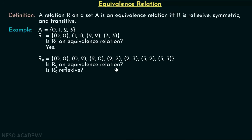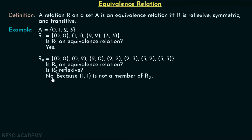Is R2 an equivalence relation? First, is R2 reflexive? We have (0,0), (2,2), and (3,3), but there is no ordered pair (1,1) in this relation. Therefore, this relation is not reflexive. There is no need to check any other property — R2 is clearly not an equivalence relation.